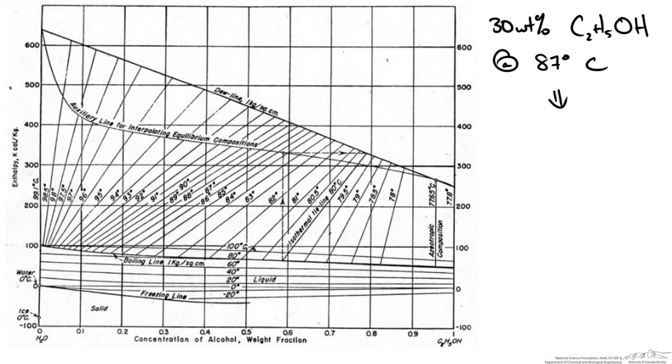Let's say we have a 30 weight percent solution of ethanol and water at 87 degrees Celsius. So this is within our phase envelope. We can draw this point. So I go up from 30 weight percent until I get to our 87 degree line which is right here. And at this point I will follow this line upwards to the dew point line and downwards to the bubble point line.